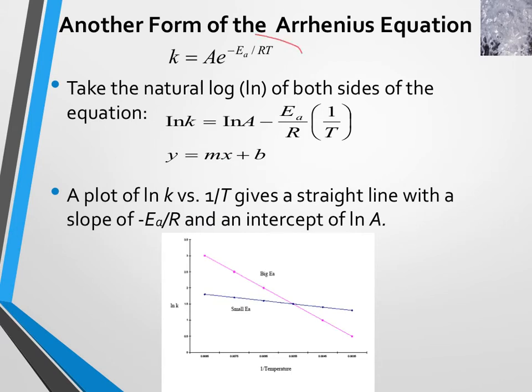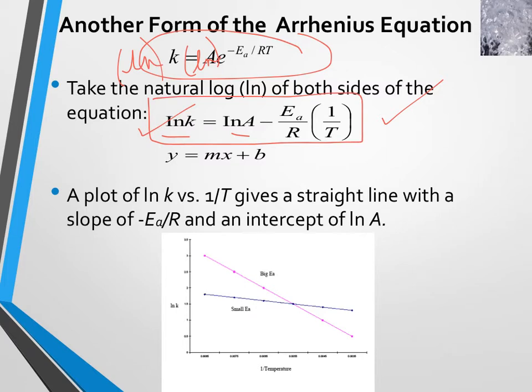Playing with the Arrhenius equation, because if you're like me, if you look at stuff in exponential form, it's not as intuitive as perhaps in the form of a line or some other proportional relationship. So if you take the natural log of both sides of this, we can get rid of the exponent, right? And so it ends up looking like this.